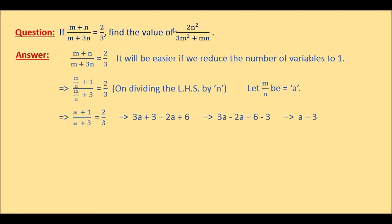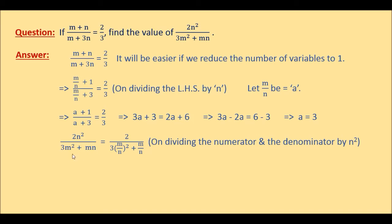Now let us take up the expression 2n squared over 3m squared plus mn. Again, this contains 2 variables and we have to reduce it to 1. We will make this in the form of m over n so that we can substitute a for m over n. How can we do that? By dividing the numerator and the denominator by n squared. Over here we have squared terms as well as a product of 2 variables, so we are dividing the numerator and the denominator by n squared.